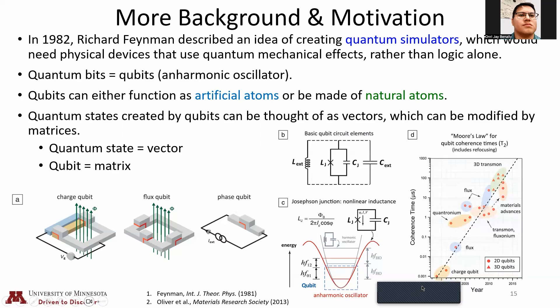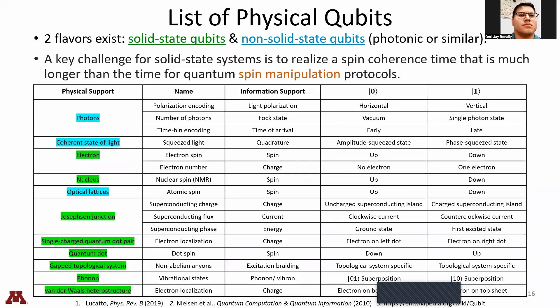We can also look at a 2D plot representing a kind of Moore's Law for quantum devices — showing qubit scaling across various kinds of qubits based on different mechanisms: photonics, magnetics, electronics, and so forth. The trajectory of qubit scaling is much more dramatic compared to the traditional Moore's Law applied to classical transistors.